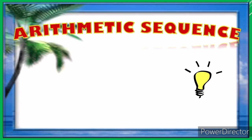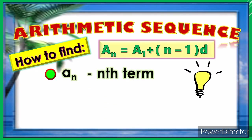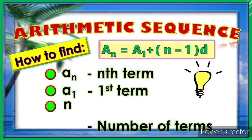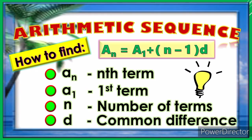Let's have another lesson for today. It's all about arithmetic sequences. We're going to use the formula of the arithmetic sequence, which is a sub n equals a sub 1 plus the quantity of n minus 1 times the common difference. We have the following objectives: find the nth term (a sub n), find the first term (a sub 1), find n (the number of terms), and find d (the common difference).